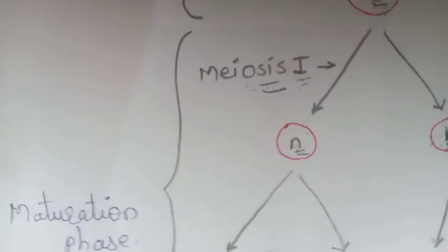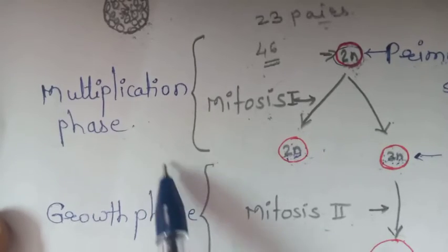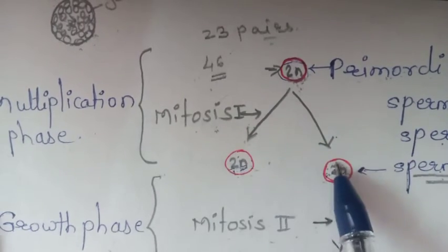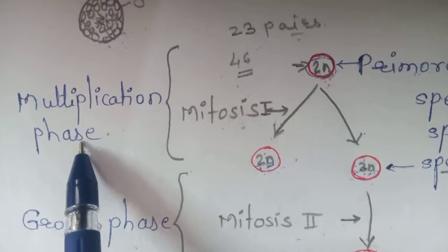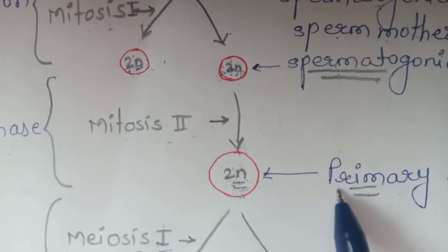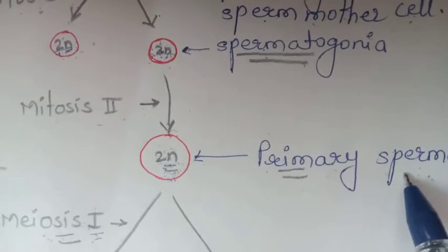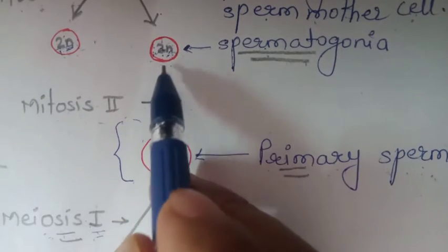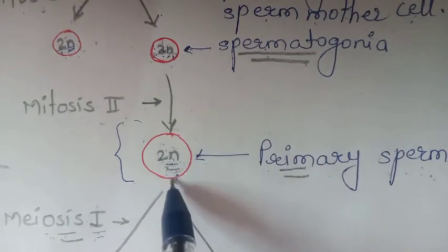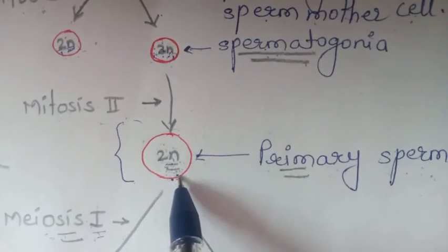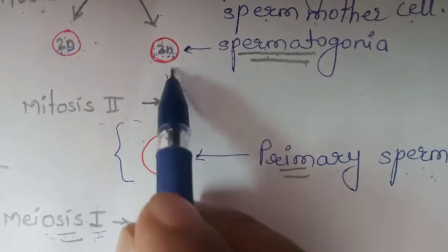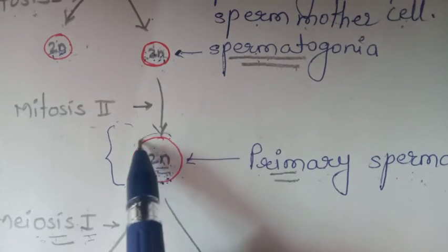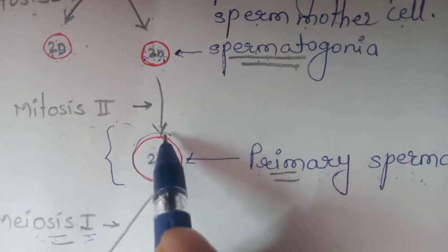Thus, the three phases of spermatogenesis are: the multiplication phase — where primordial germ cells mitotically divide to form spermatogonia; the growth phase — where the primary spermatocyte absorbs nutrients, increases in size, and pauses division; and the maturation phase — where the primary spermatocyte meiotically divides.